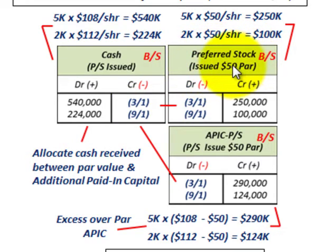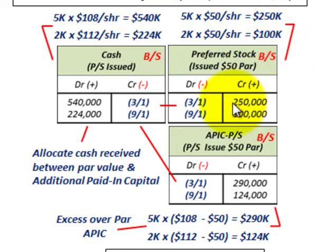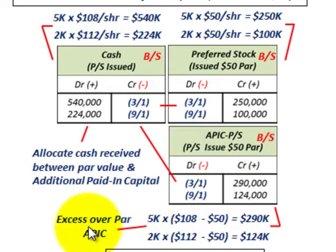Now we set up the equity account for preferred stock at par value. On March 1st, we issued five thousand shares at the fifty dollar par value per share, which is two hundred and fifty thousand dollars — credited to preferred stock. On September 1st, we issued two thousand additional shares at fifty dollars par value, equaling one hundred thousand dollars credited to preferred stock.